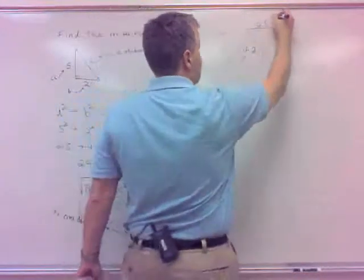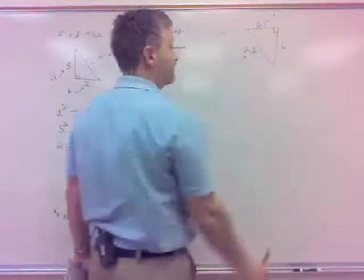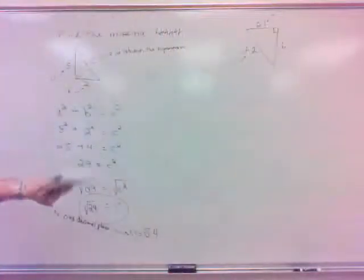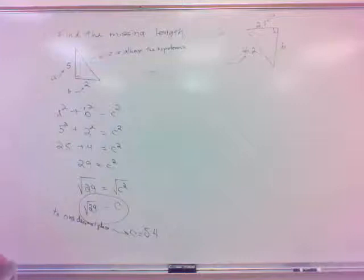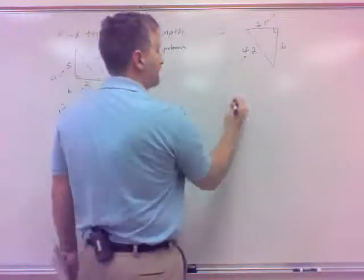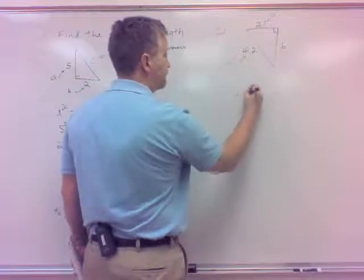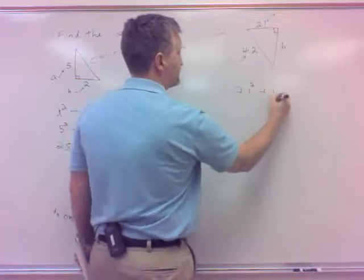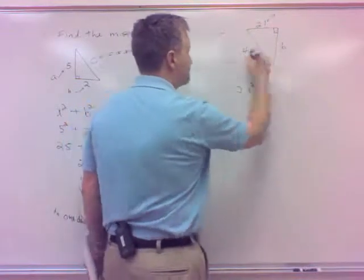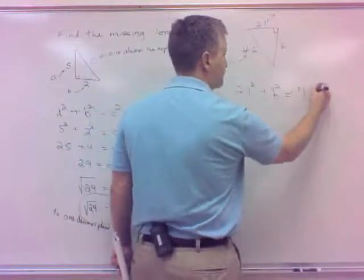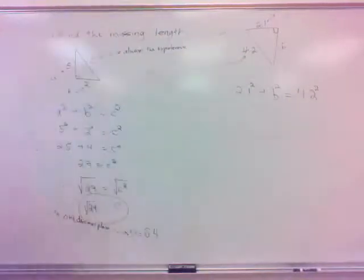So, if we call this one A, then let's find, we're finding B. Or vice versa, A and B, you can swap those around. But, yeah, I need to find out what this is. So, I do my A squared, be 2.1 squared, plus B squared, which I don't know, equals C squared. So, that would be 4.2 quantity squared.